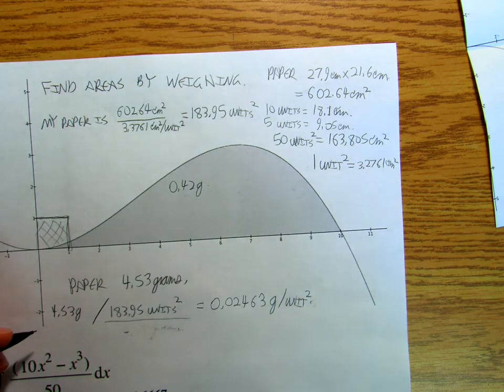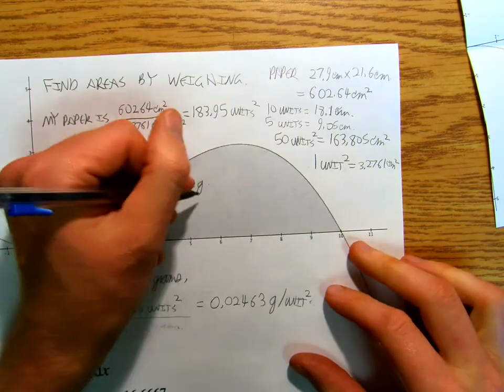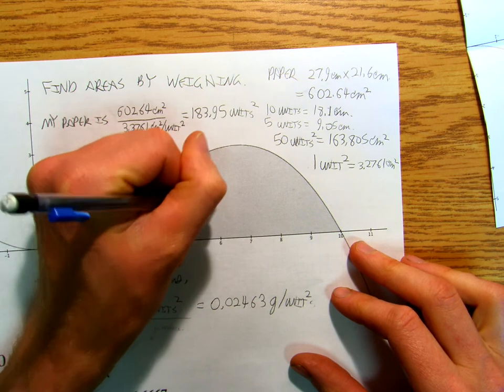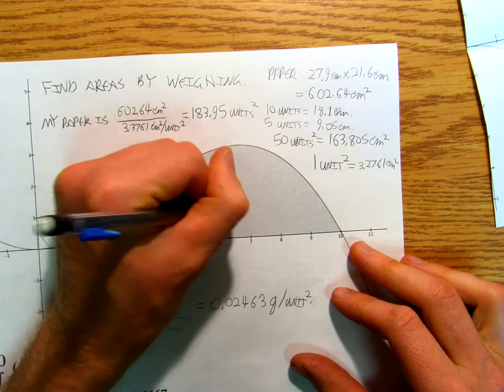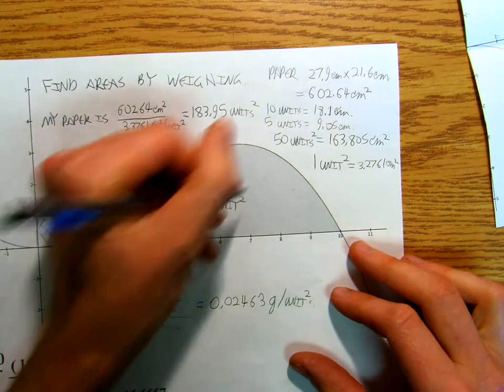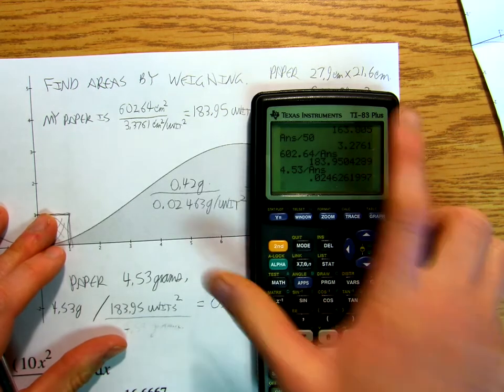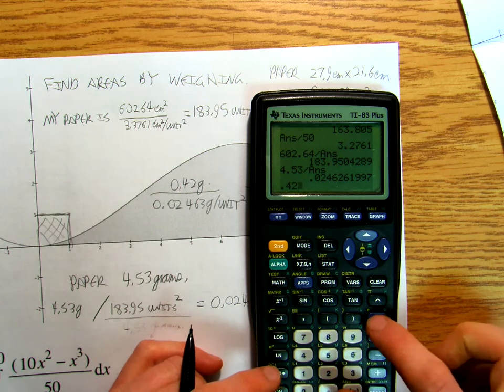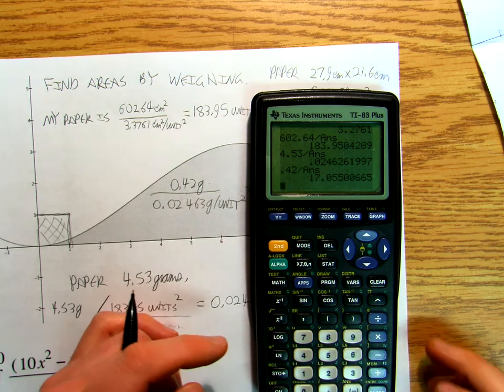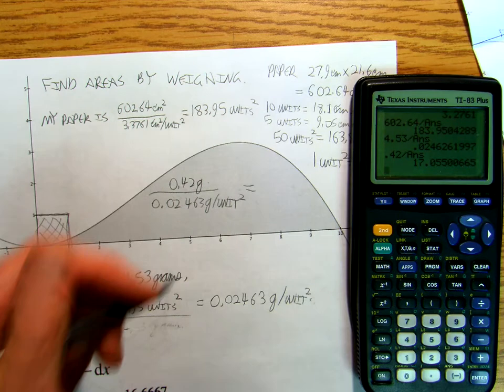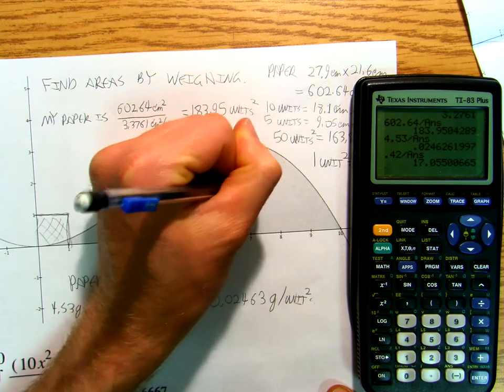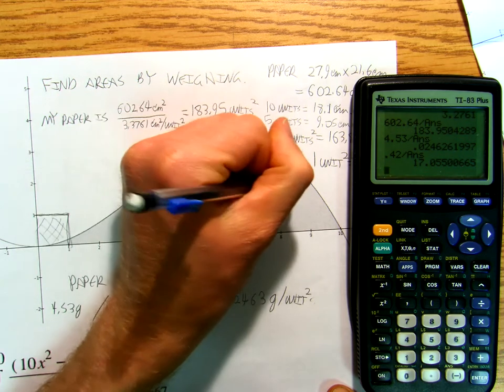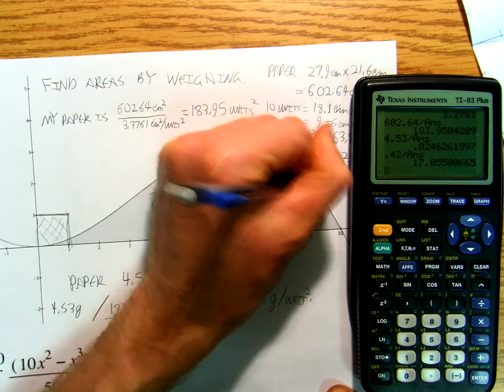And then if I divide that by 0.02463 grams per unit squared, which I should still have in my calculator, so I do 0.42 divided by my answer and I get 17.06 units squared.